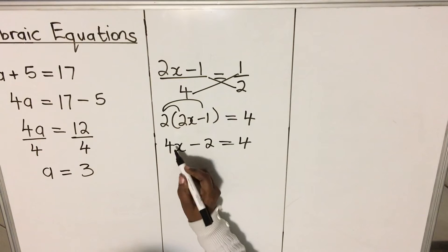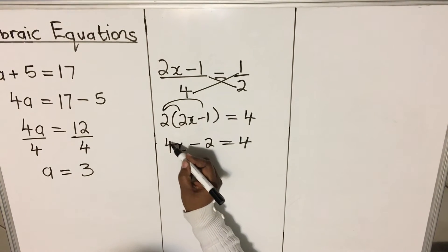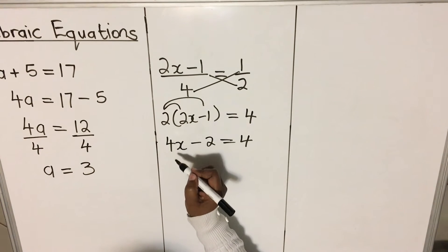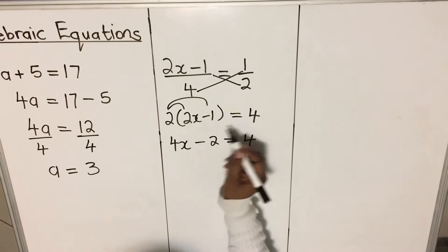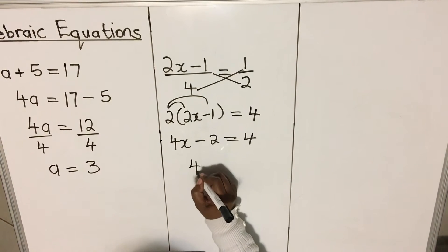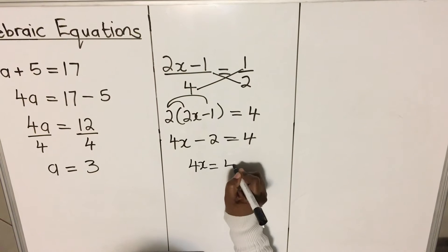Now, we're going to leave the variable with its coefficient, this side, and the constant to the other side. And 4x is equals to 4.